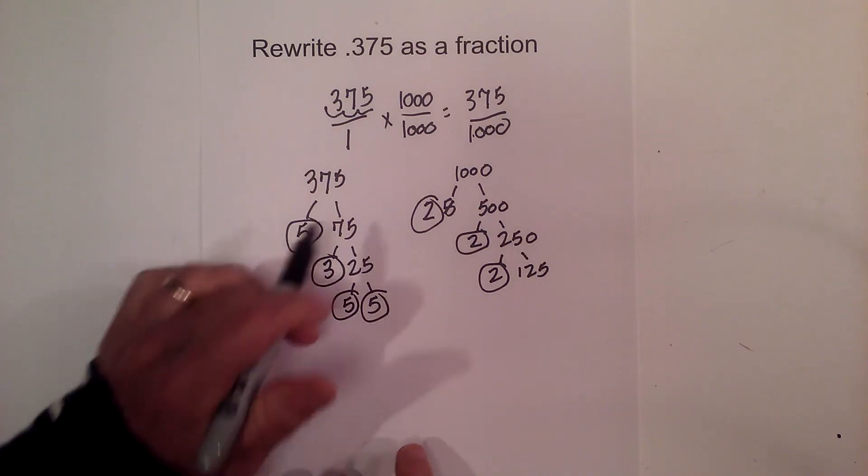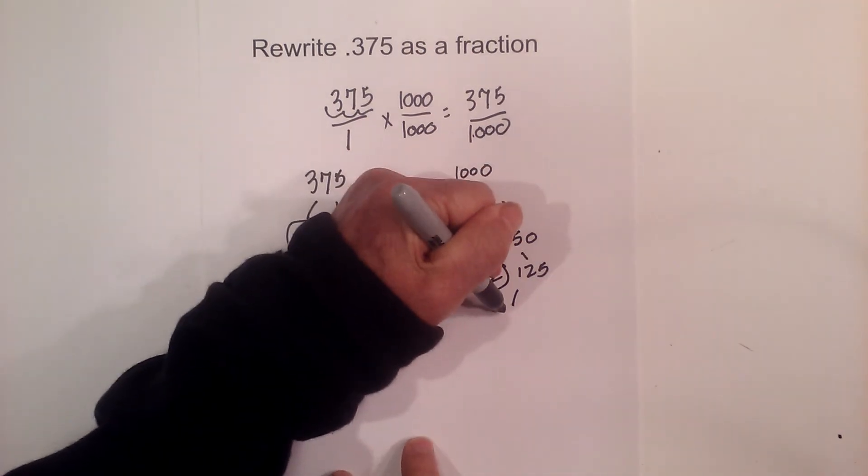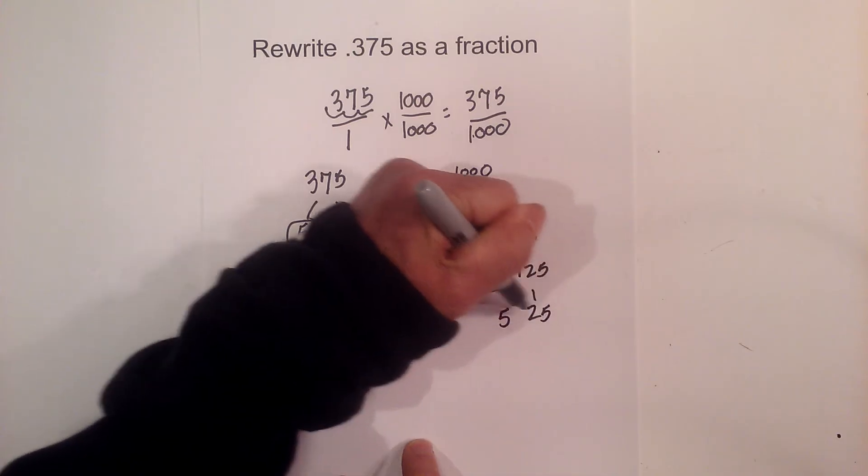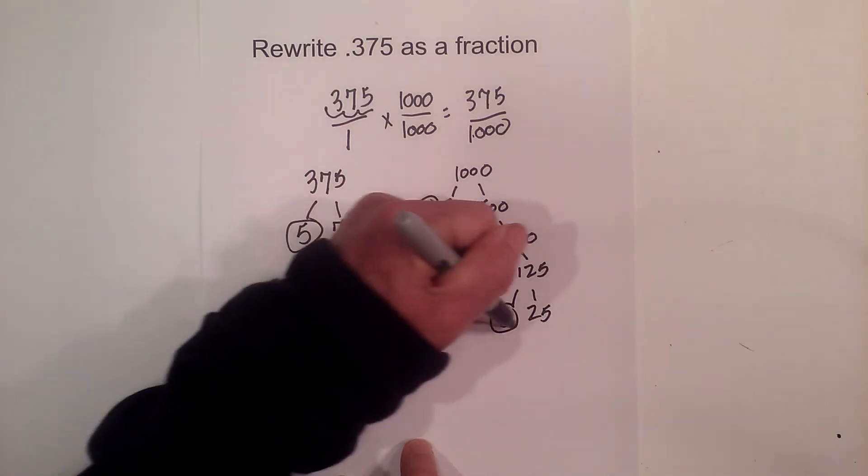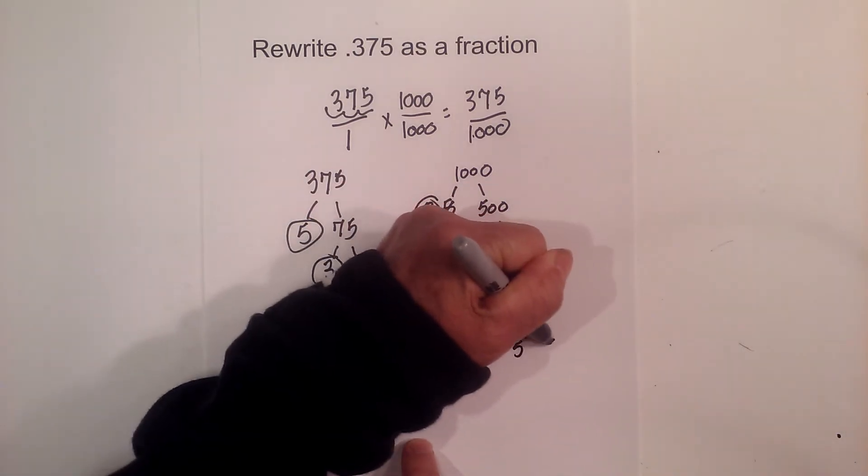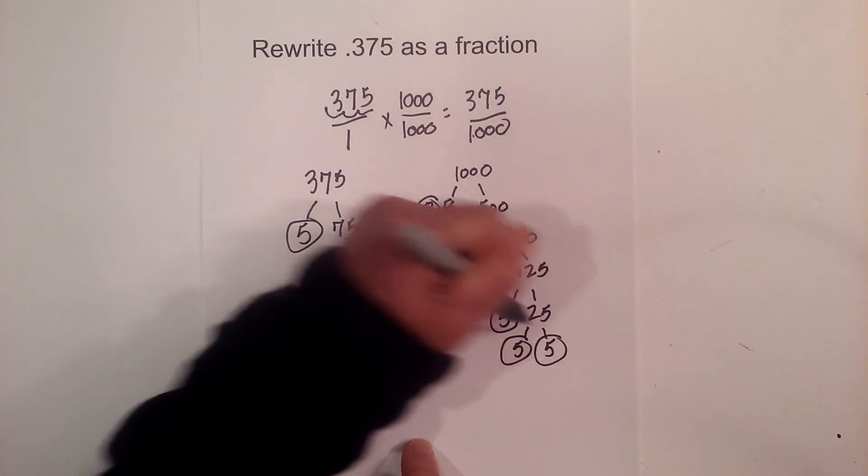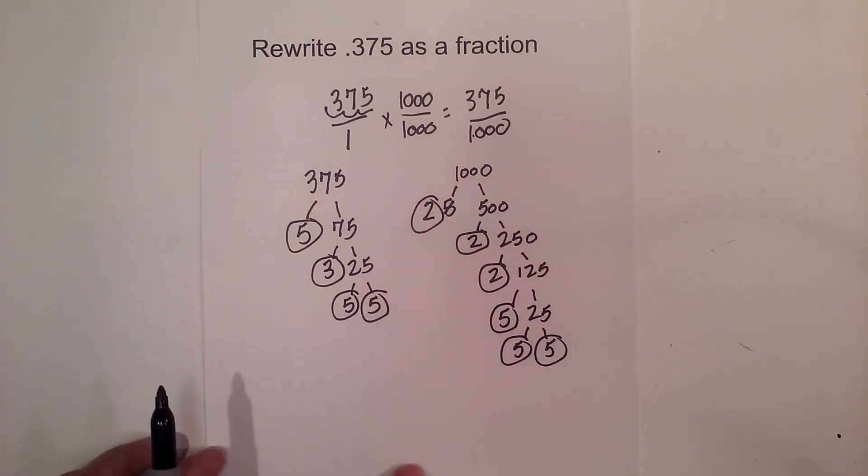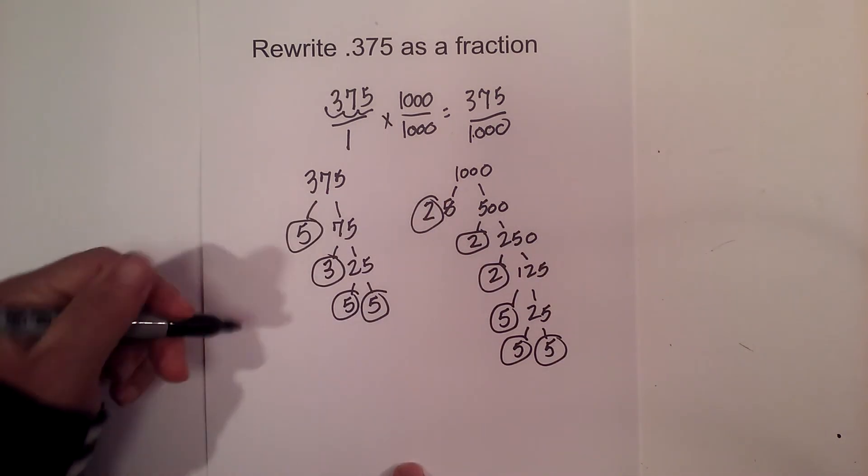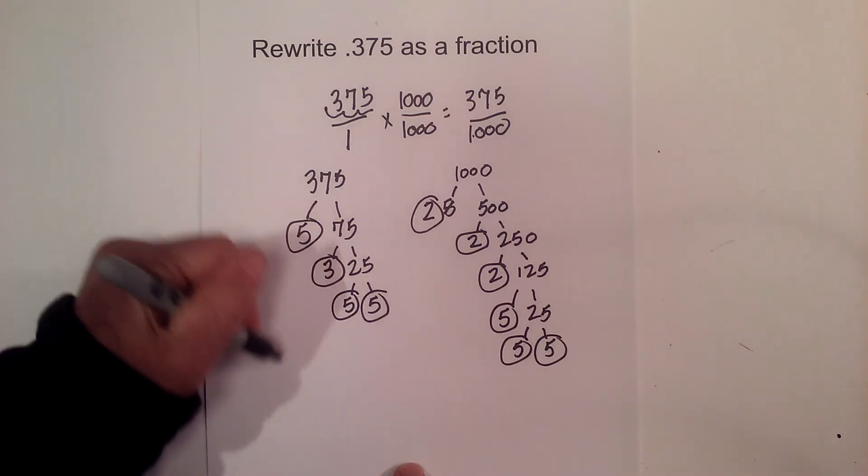And we're getting close. And then 5 times 25 equals 125 and then 5 times 5. Circle the 5. We're down to prime numbers. So now I'm going to put them in a little chart, all the prime numbers.